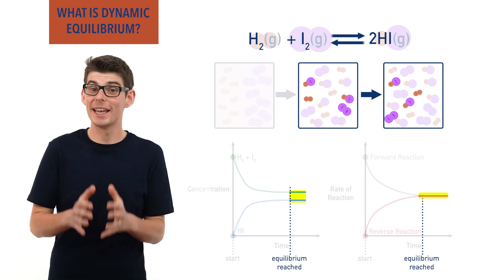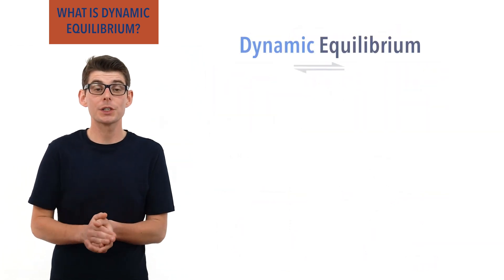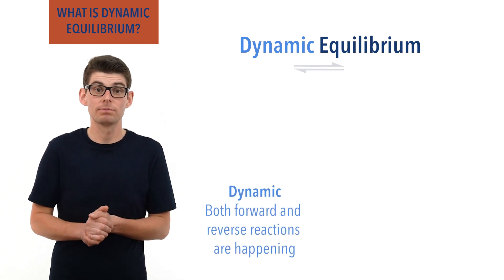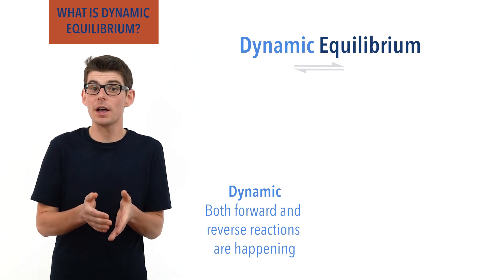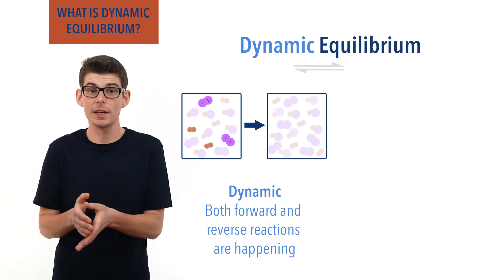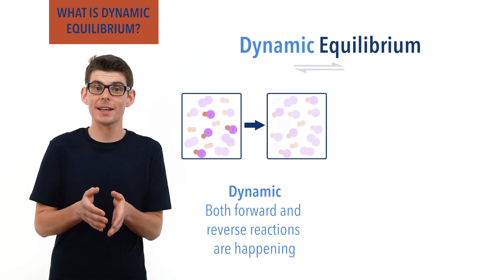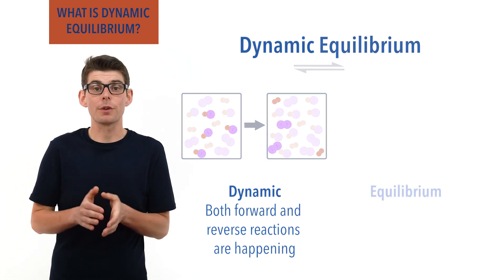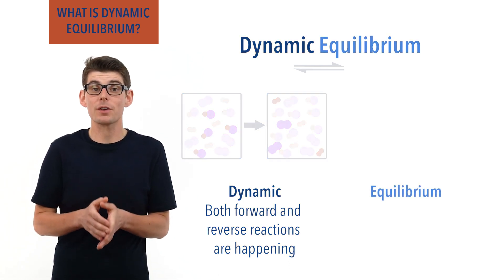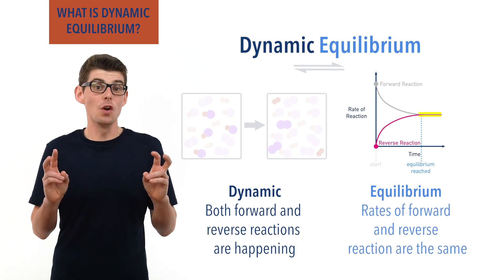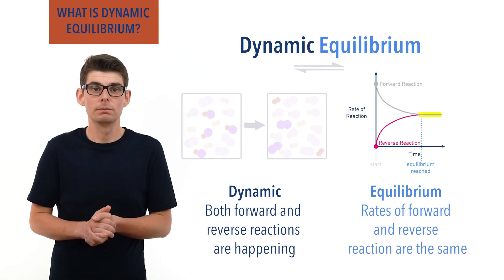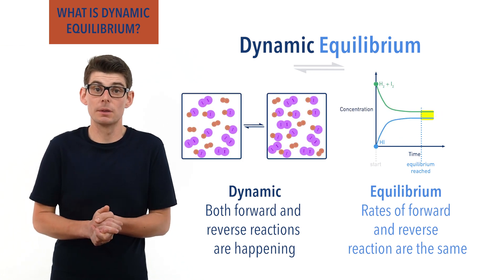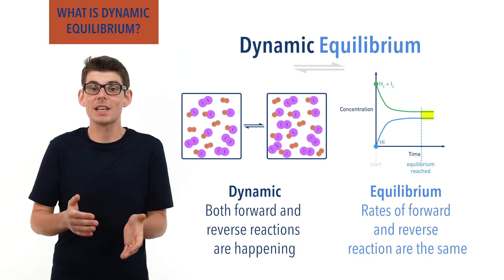The word 'dynamic' here is really important. The dynamic part refers to the fact that both the forward and reverse reactions are still happening — hydrogen and iodine are constantly colliding and forming hydrogen iodide, and hydrogen iodide is constantly reacting to form hydrogen and iodine. The equilibrium part refers to the fact that the rates of both reactions are the same, and it looks like the system isn't changing at all. Concentrations of everything stay the same, and all physical properties of the system, like colour, temperature and pressure, stay the same as a result.